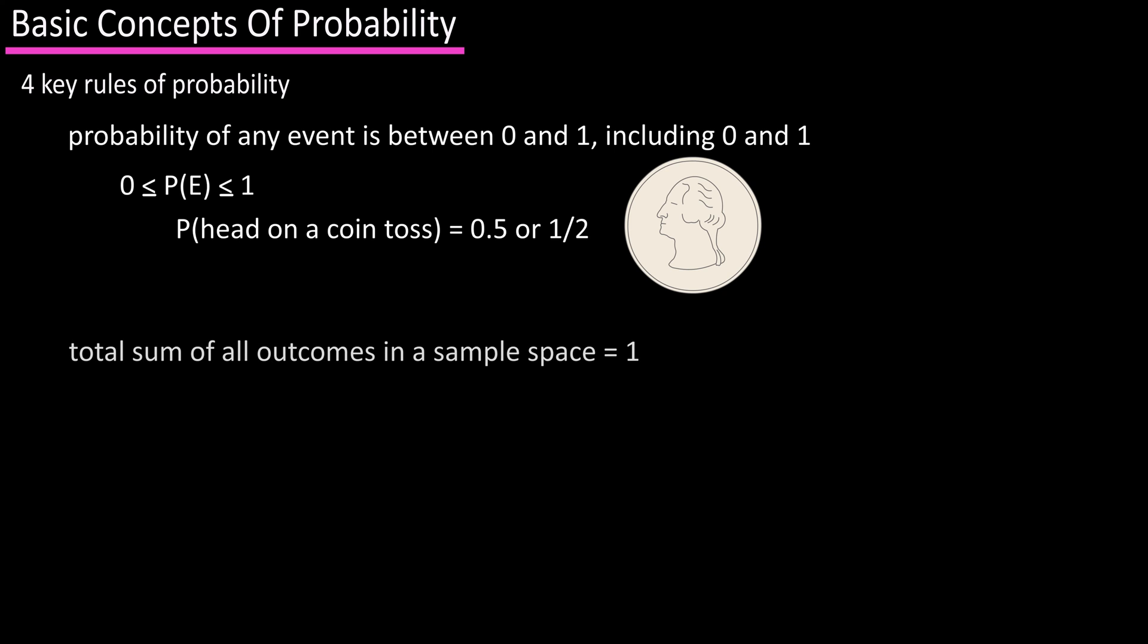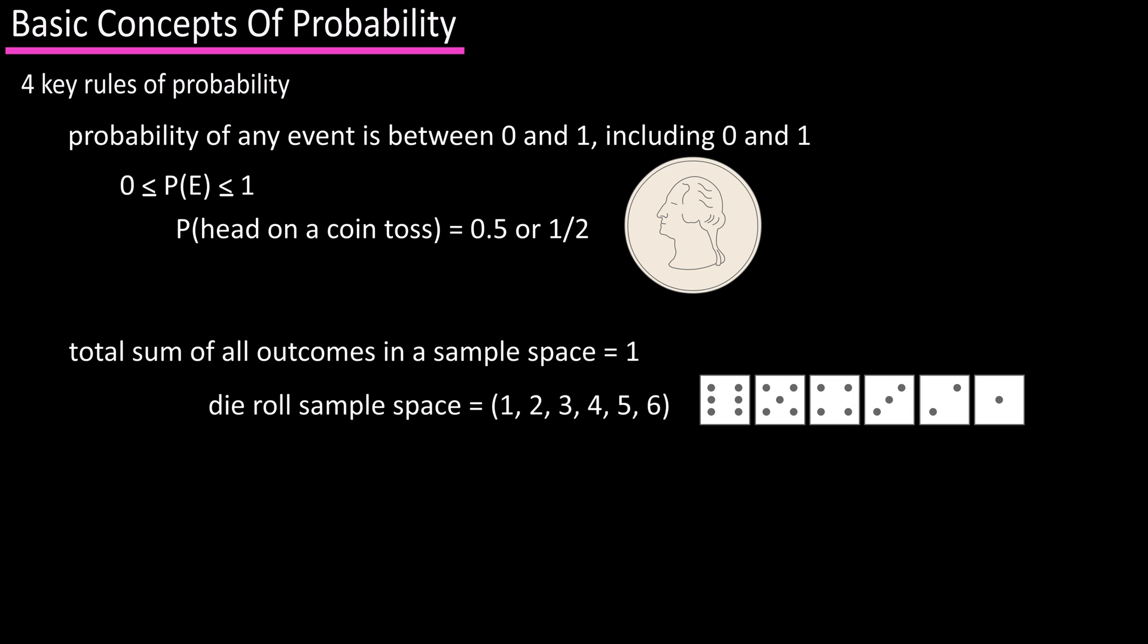Rule number two is that the sum of all possible outcomes in a sample space is 1. So the sample space for a die roll is 1 through 6, with each having a 1 over 6 probability of occurring. Add these up, and we get 1.